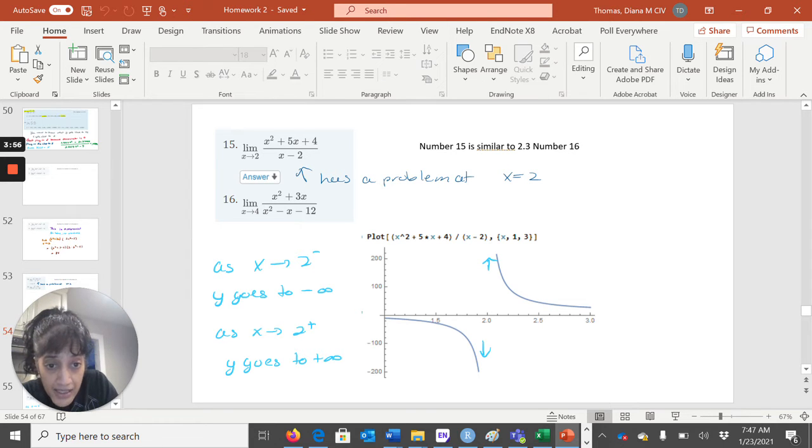that as I approach 2 from the left, my y is going downstairs to hell. So this is negative infinity as I approach 2 from the left.